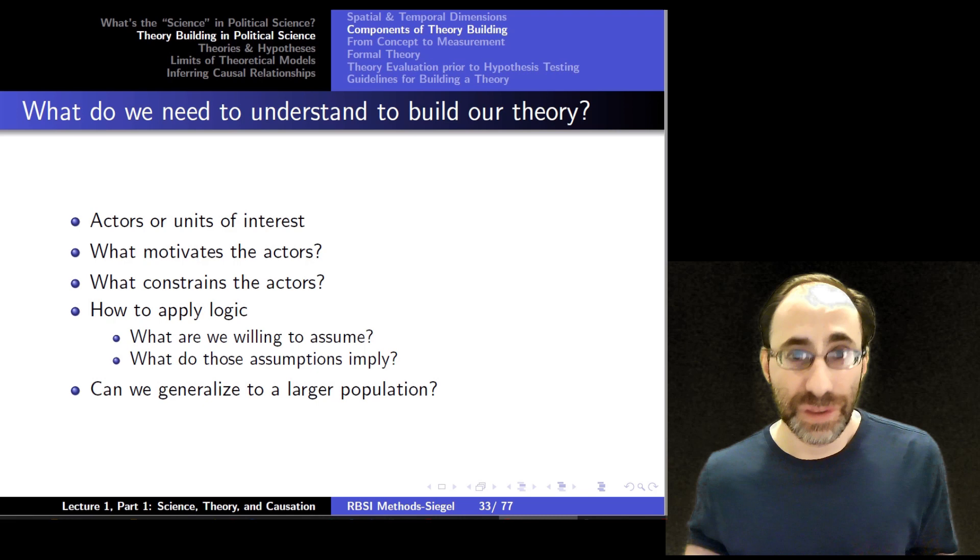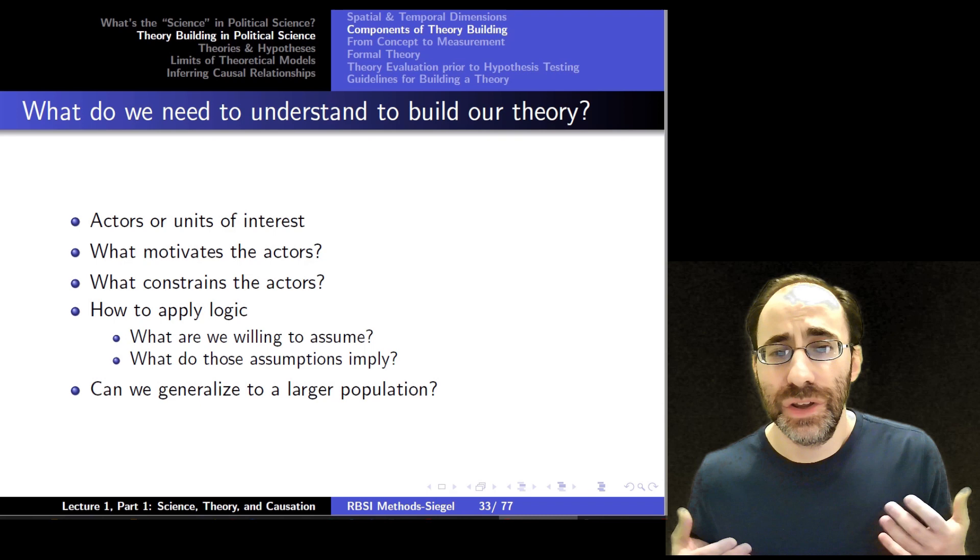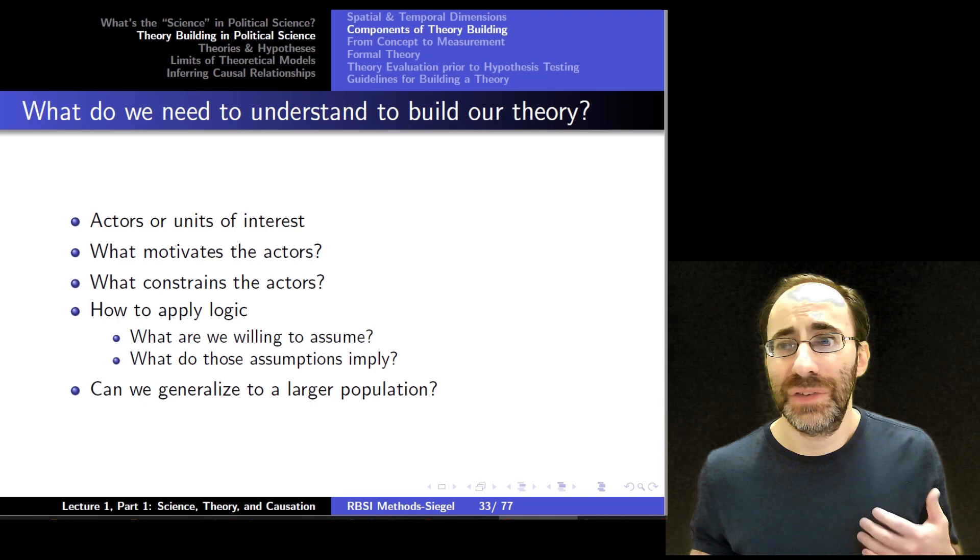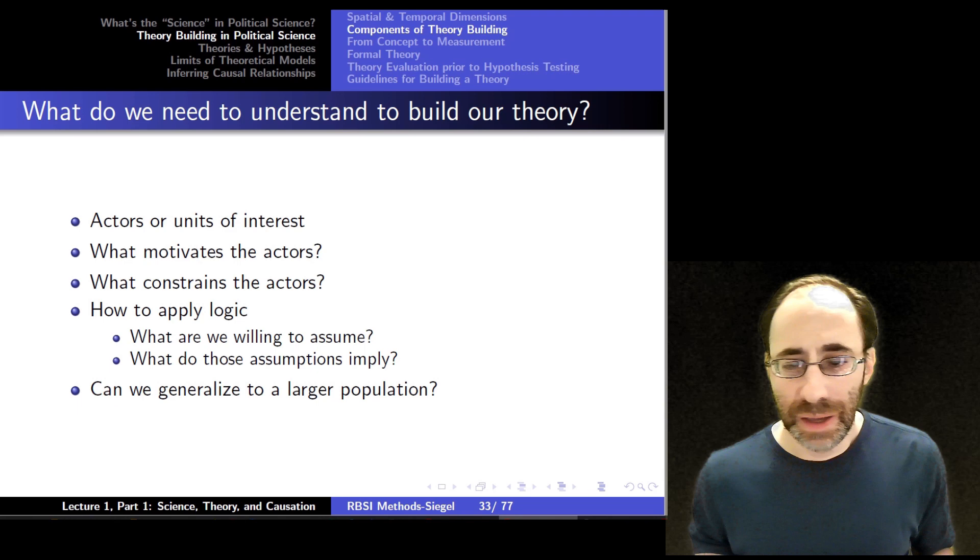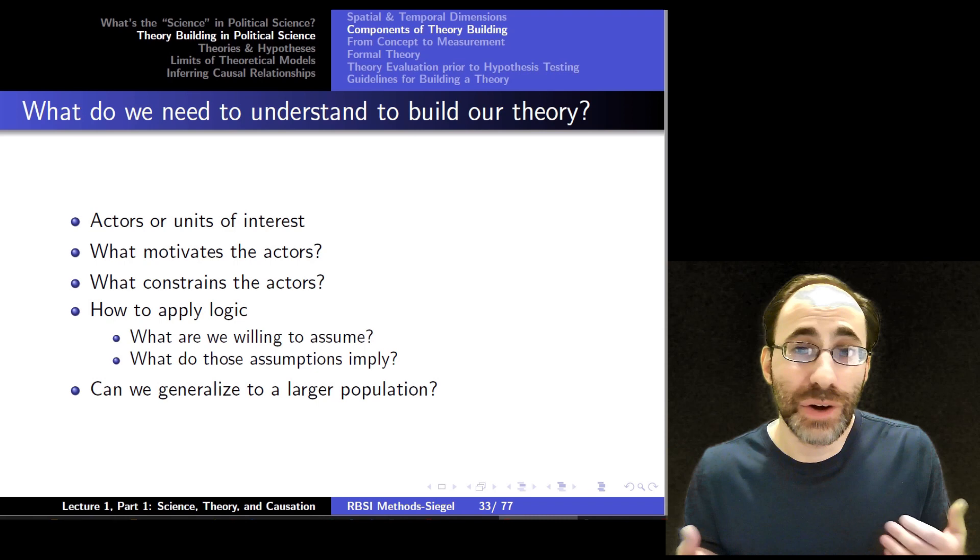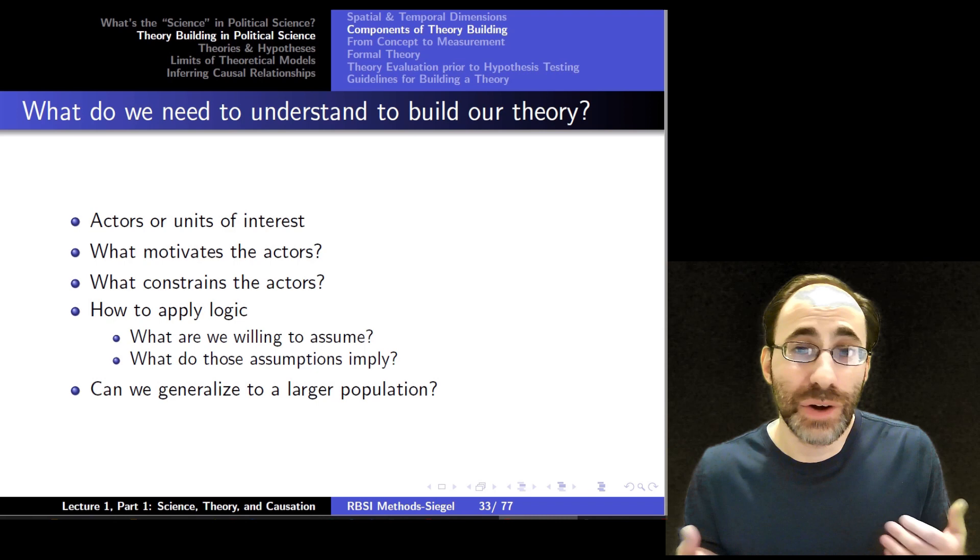Once you have understood your variation, you want to move on to start building the components of your theory. To do that, we want to start off with actors. What are the units of interest? Who are the actors in your theory? Where is the variation happening? Are the actors countries? Do you care about how different countries interact in some fashion? Do you care about how different countries evolve over time based on various properties of the countries or of their interactions? Or is it about people? Do you care about how individuals behave? These are the questions you have to ask first. Who are your actors? Who is involved? Which actors are engaging in your causal interactions and your causal explanations?